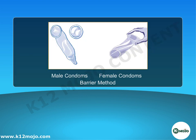Barrier method: In this method, physical devices such as condoms and diaphragms are used. Condoms are used by males as a covering on the penis, and diaphragms are used by females by placing them in the vagina. They prevent the sperm from meeting the ovum, and also protect the person from sexually transmitted diseases.